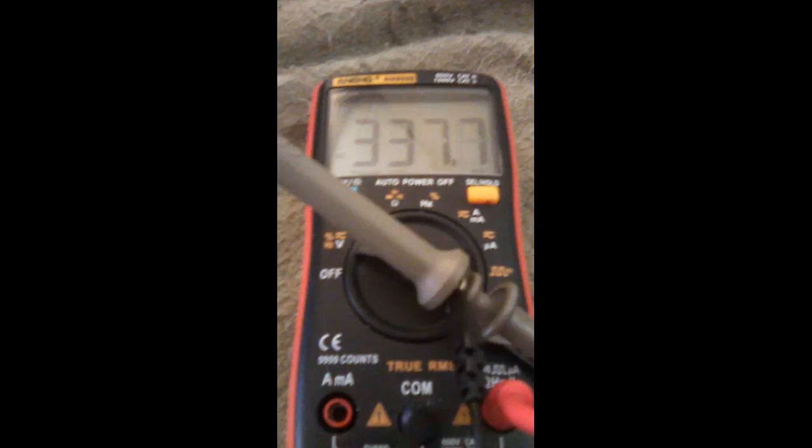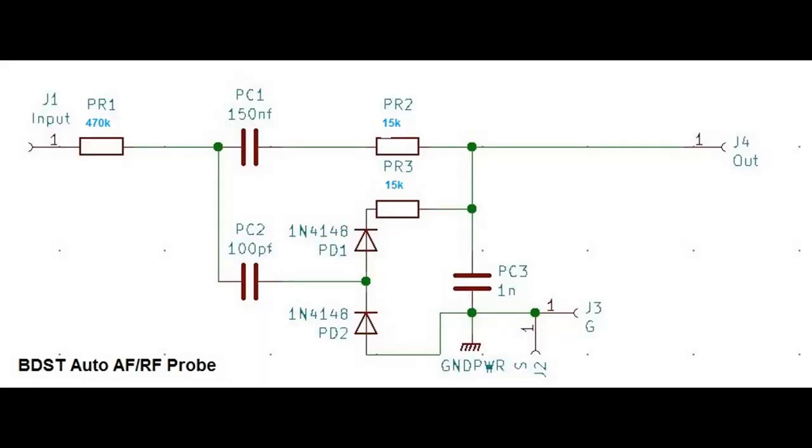The only other change is with the probe that Doug and I have been working on. I changed the input resistor from 10 kilohm to 470 kilohm because the 10 kilohm was causing a loading problem again. Just changing that to the 470, it's just as sensitive - you can pick up the initial RF right before the first tube, and it's clear all the way through.